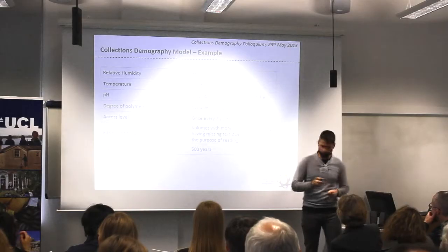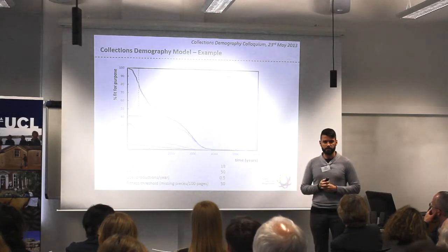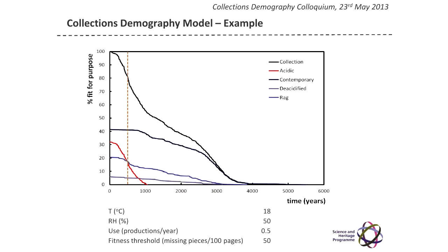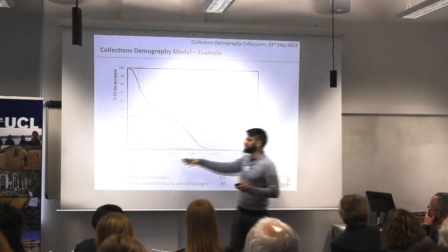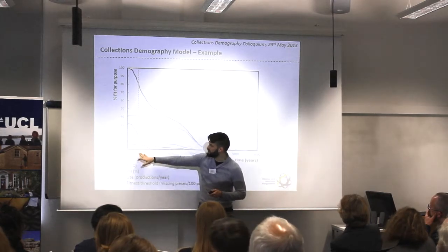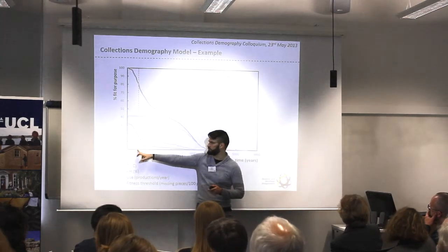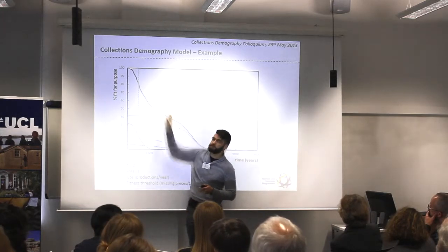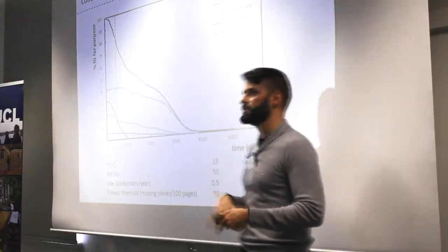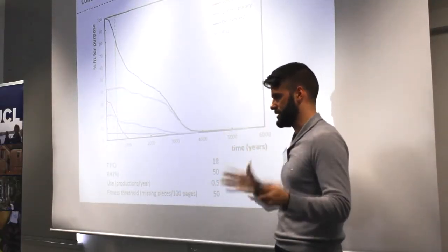So, without further ado, this is the graph that Matija showed you earlier, and these are the variables I just presented. The black line is the entirety of the collection — how its fitness for purpose, which is to not have more than 50% of large missing pieces within it, decreases over time. Therefore, at around the 500-year mark, about 80% of the collection will still not have 50% of large missing pieces of text.